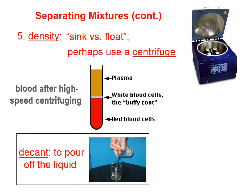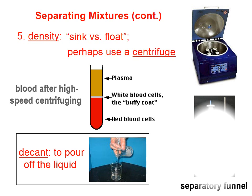We could also separate mixtures by decanting, and that means to pour off the liquid. I gave an earlier example of salt water mixed with sand — the sand tends to sit at the bottom of the beaker. We can separate most of the salt water from most of the sand by simply very carefully pouring off the salt water, and when the sand is just about ready to sneak out, we tip the cup back up. So decant is a fancy term for pouring off the liquid.